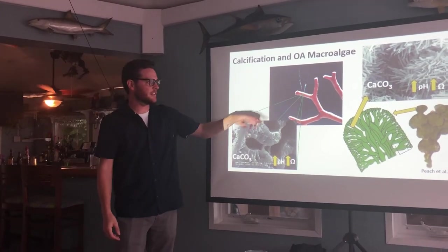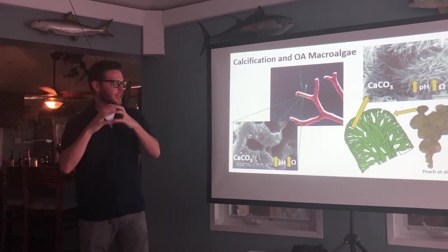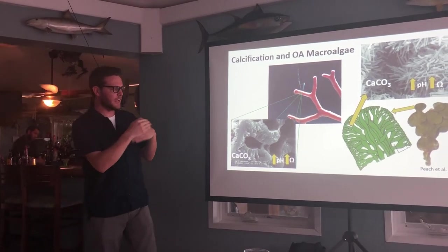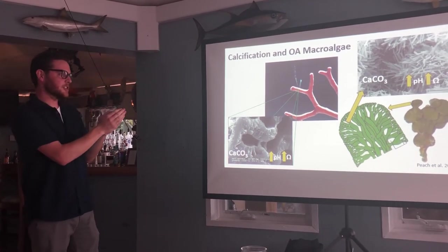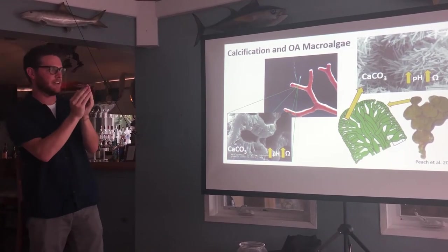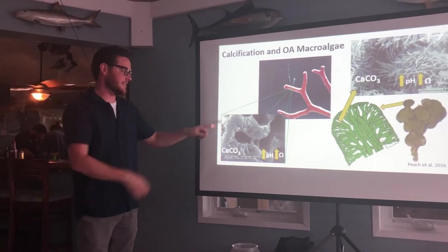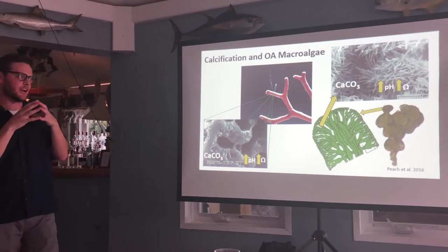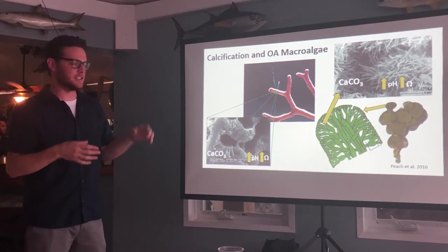Another example is Jania — it's a different color, it's branching, not a lobe shape, and it forms calcium carbonate in a different way, more on the surface. It doesn't have these pockets, so we think this one might be more susceptible to ocean acidification because it doesn't have this separation from the surrounding seawater. It's really important that they increase pH in these micro-environments to form calcium carbonate, and if we're decreasing pH, it might be much harder for them to do that.